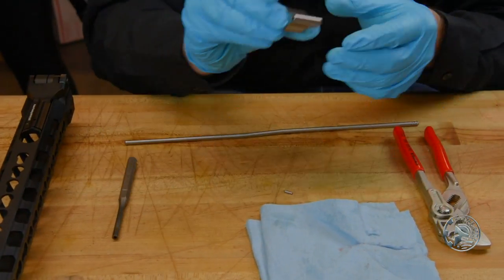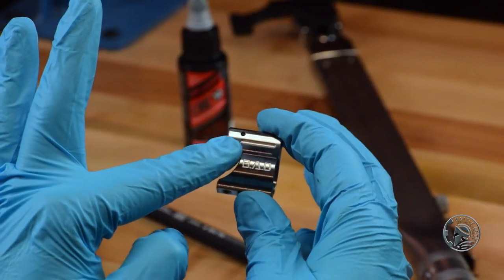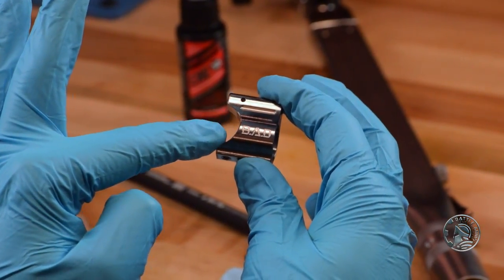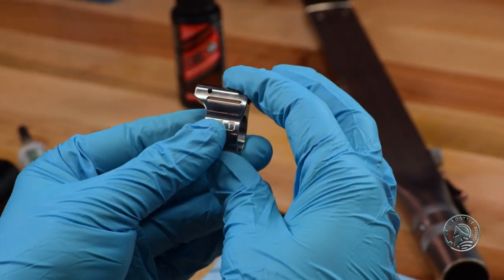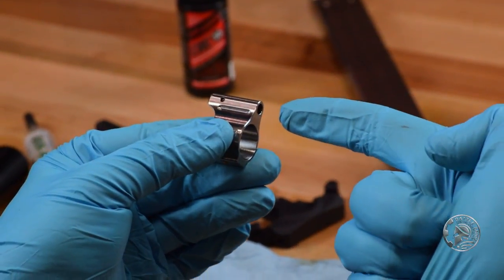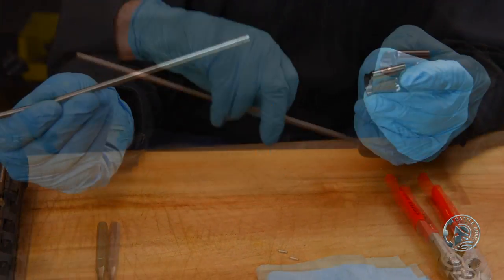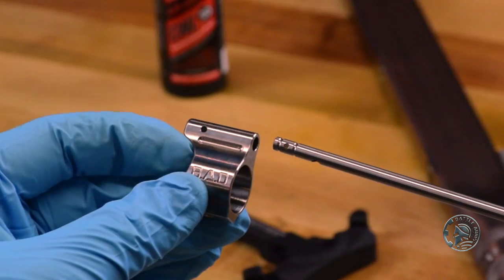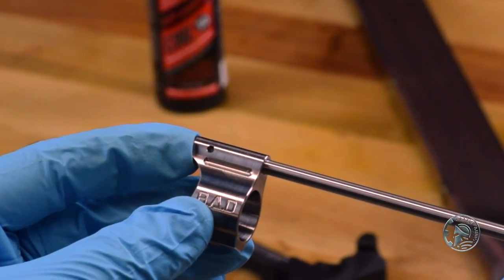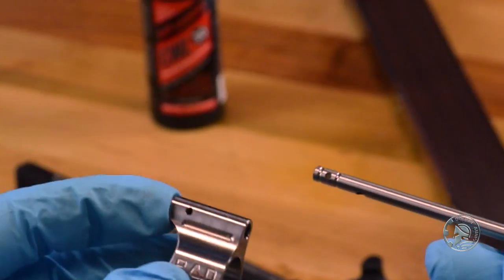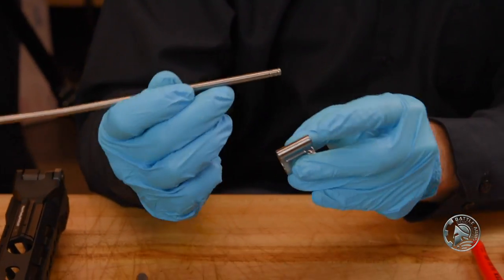The front of the gas block is marked with a C, which points towards the very front of the barrel. This means the gas tube is going to insert from this direction. We want to insert the gas tube into the gas block and line up this pinhole with this pin.